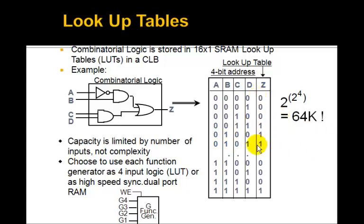Since there are 16 bits in the output, there are 2 to the 16, or 64K, different ways of arranging those outputs. So with a simple 16 by 1 RAM, you can implement over 64,000 different logic functions — no AND gates, no OR gates, just a lookup table.